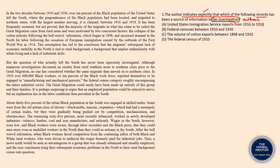Option A: United States Immigration Service reports from 1916 to 1918. The only mention of these years is here, and the author does not mention any United States Immigration Service investigation reports. In fact, it is not even the author's investigation — it is a third-person claim. So clearly the author has not used any registers of 1916 or 1918 in her investigation. Option B: Federal census between 1910 and 1930. Again, there is only a mention that between these two decades over 10% of the black population of the United States left the south and moved north, but no federal census between 1910 and 1930 has been cited. So this is also eliminated.